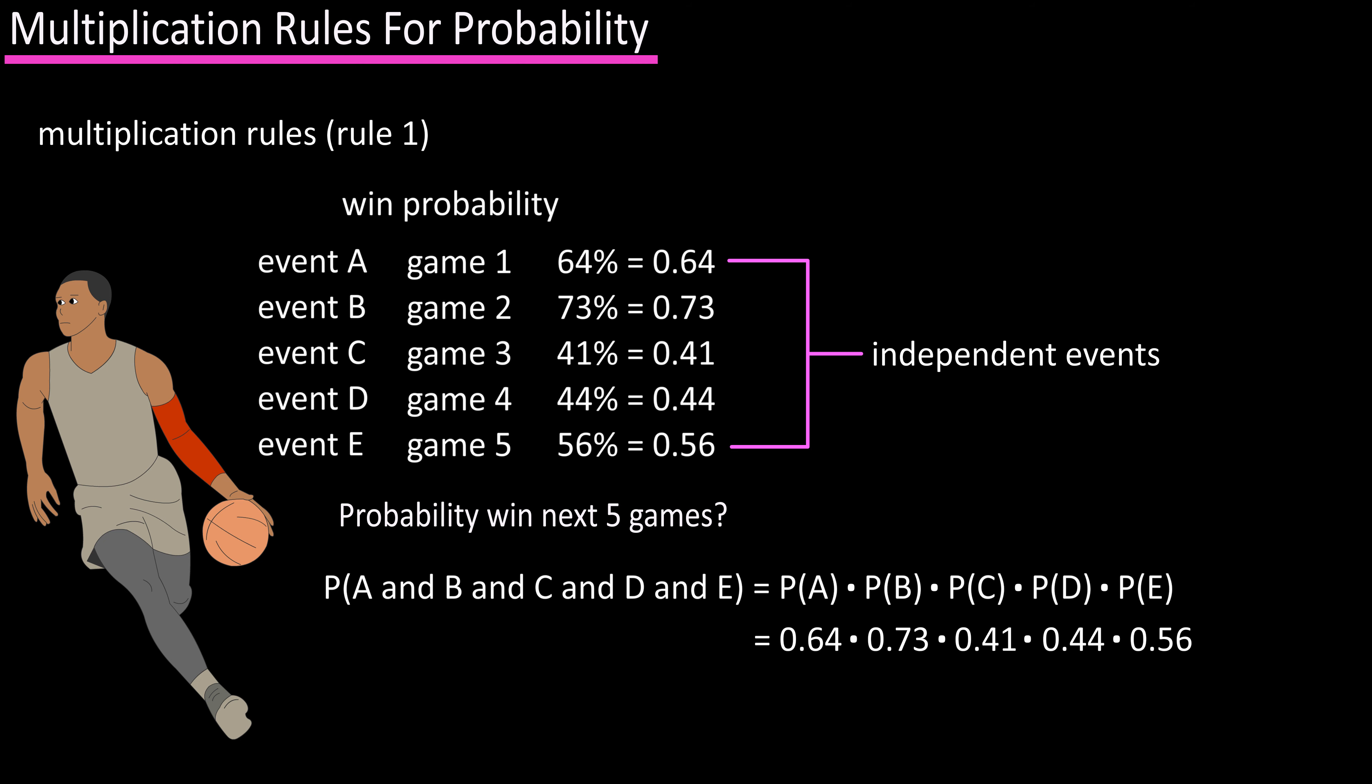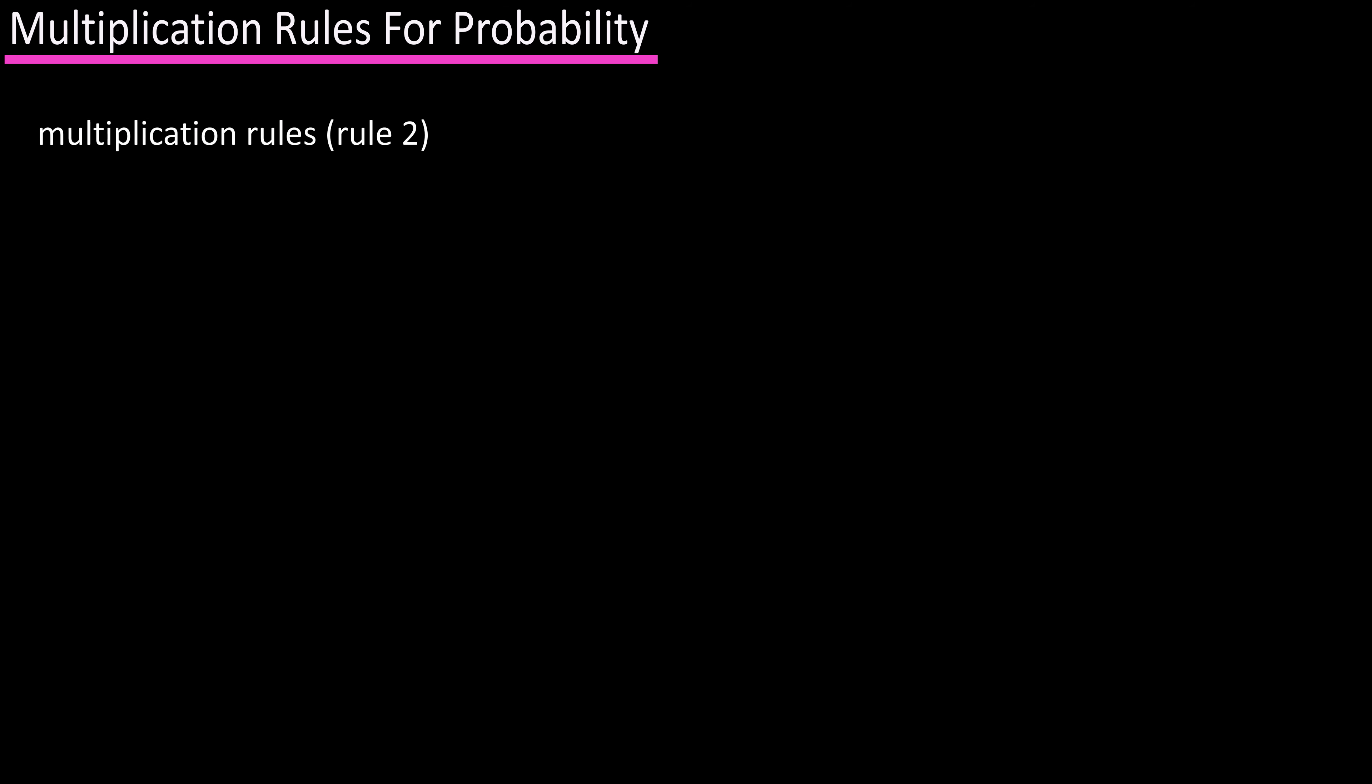So we have 0.64 × 0.73 × 0.41 × 0.44 × 0.56, which equals 0.047, or a 4.7% probability to win five in a row. Now for multiplication rule number two,